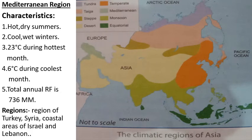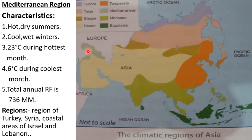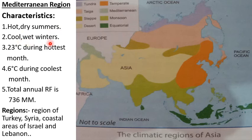The next climatic region is the Mediterranean region. As the name suggests, it is the area around the Mediterranean Sea. This area experiences Mediterranean type of climate and includes countries like Turkey, Syria, coastal areas of Israel, and Lebanon. The characteristics of this climatic region are hot, dry summers and cool, wet winters. Temperature is 23 degrees Celsius during the hottest month and 6 degrees Celsius during the coolest month, with a total annual rainfall of 736 millimetres.